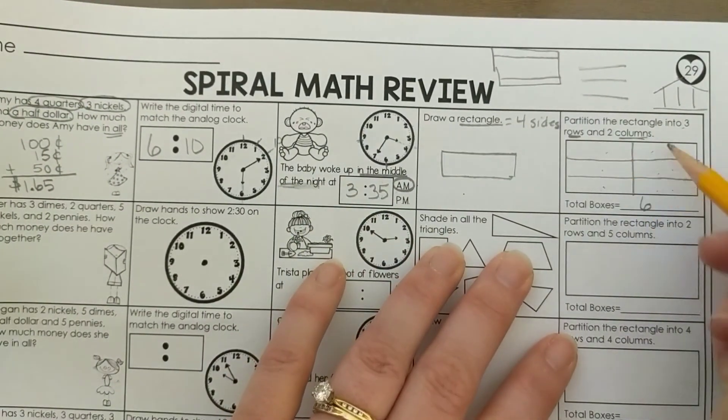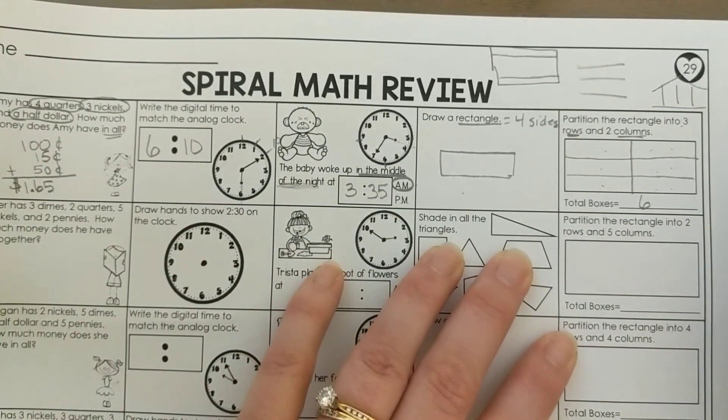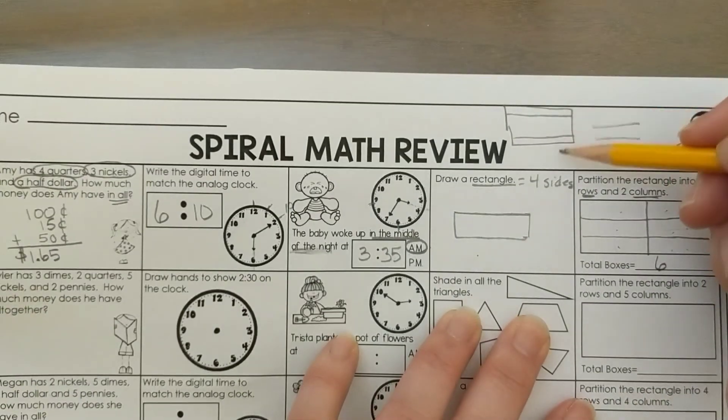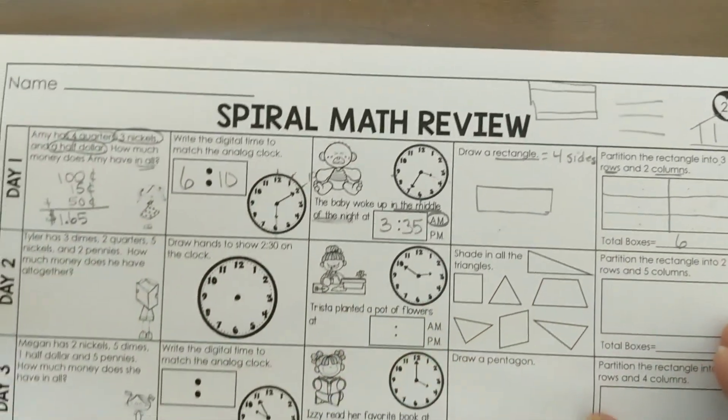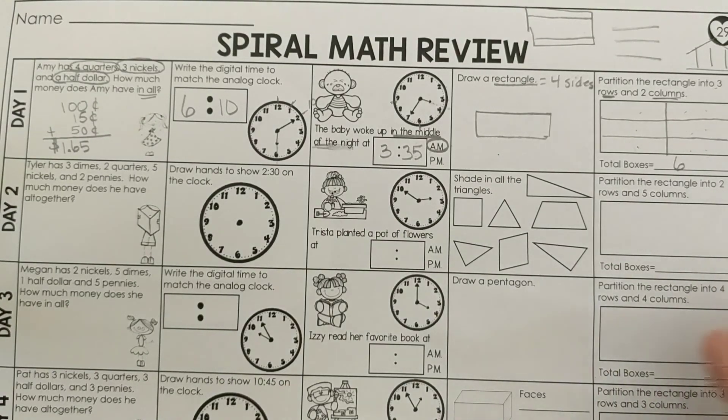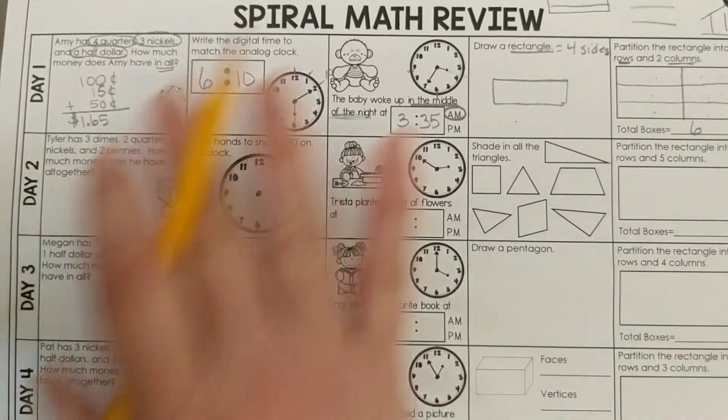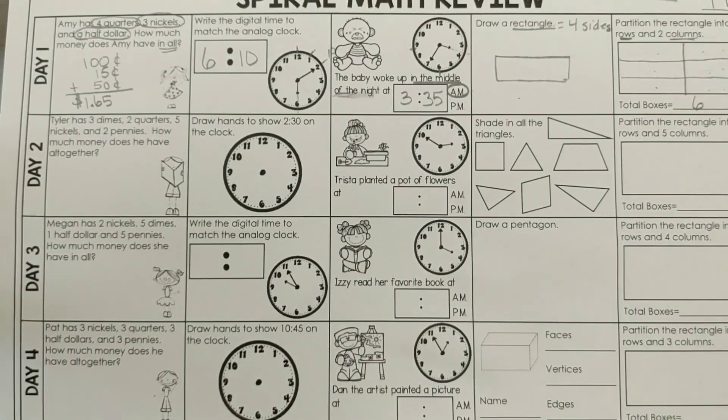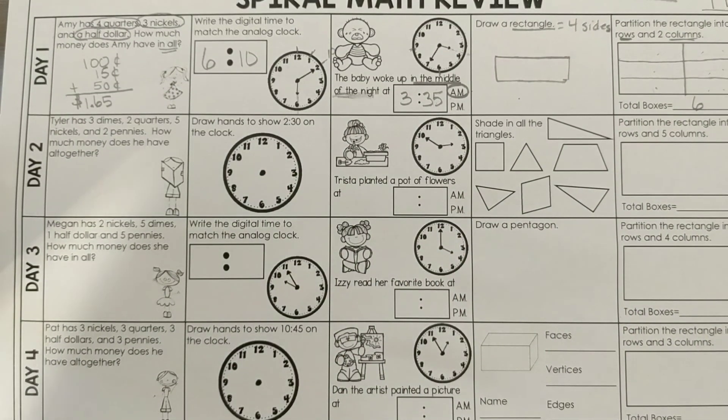As best as you can, it doesn't have to be perfect, but I don't want to see it like this. Now you know how to partition, and we'll see your spiral review on Friday. The whole sheet, you'll take a picture of it and upload it for me.